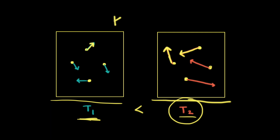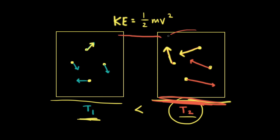The equation for kinetic energy is equal to one half mv squared, where m is the mass of a particle and v is the velocity of a particle. Since the gas particles in the box on the right are on average traveling faster and have higher velocities, the average kinetic energy of the particles in the box on the right is higher than for the particles in the box on the left. And so the average kinetic energy is proportional to the temperature — the higher the temperature, the higher the average kinetic energy of the particles.